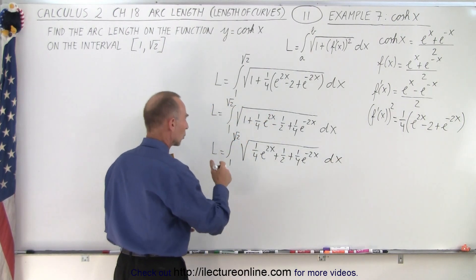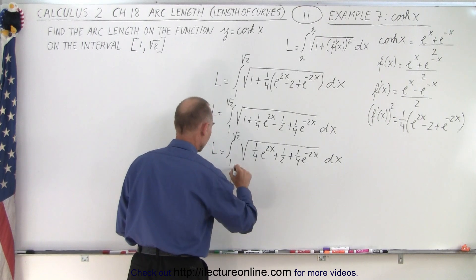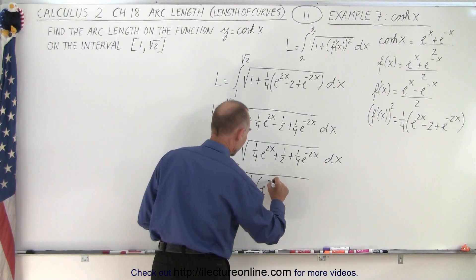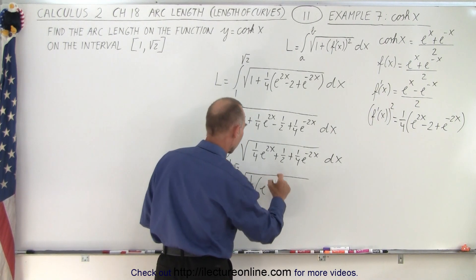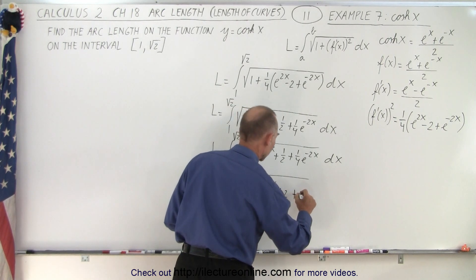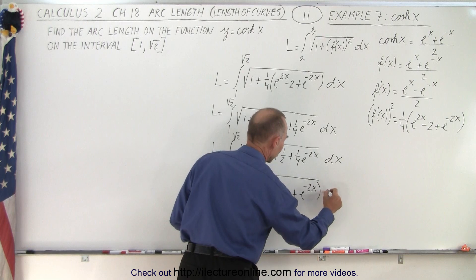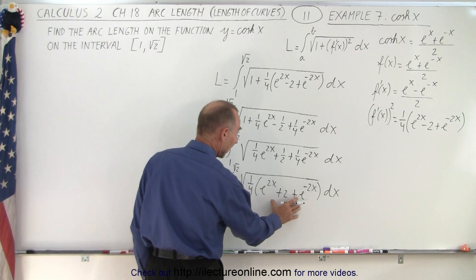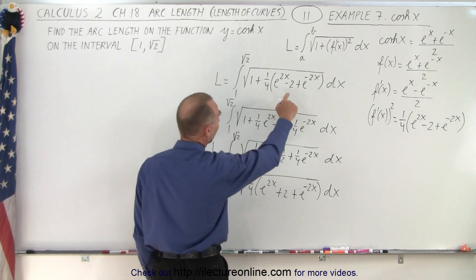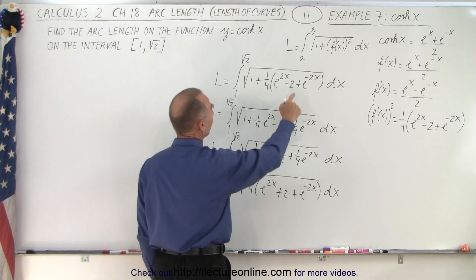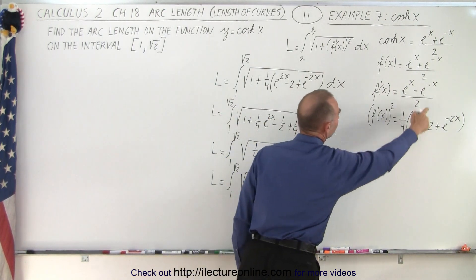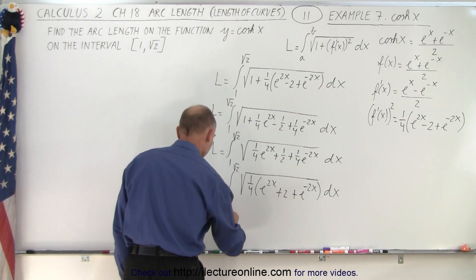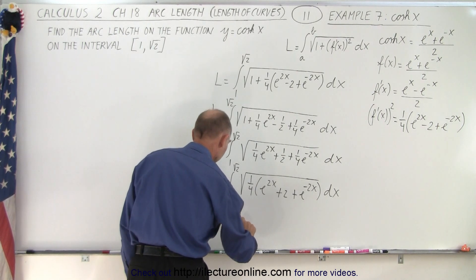Now notice we can factor out a quarter. So L is equal to the integral from 1 to the square root of 2 of the square root of 1 quarter times e to the 2x plus 2 plus e to the minus 2x, times dx. The reason we did that is because we can now write this as a binomial squared. Notice that this expression is simply the square of e to the x plus e to the minus x.